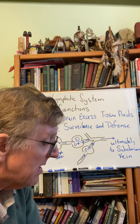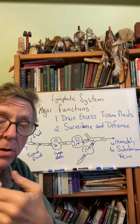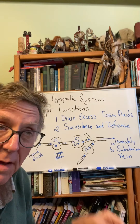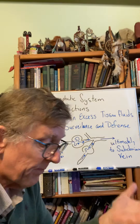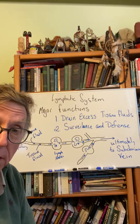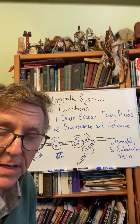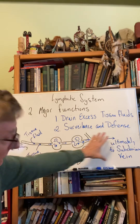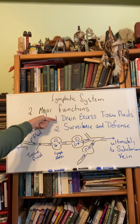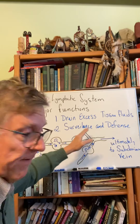Looking at slide two, the right lymphatic duct drains the right side of your face, your right shoulder, your right arm, and your right chest, feeding into the right subclavian vein. All other parts of the body — including the lower part of the right side — are collected into the thoracic duct, which feeds into the left subclavian vein. So we have this system of lymphatic vessels collecting tissue fluid, which is one of the two major functions of the lymphatic system.